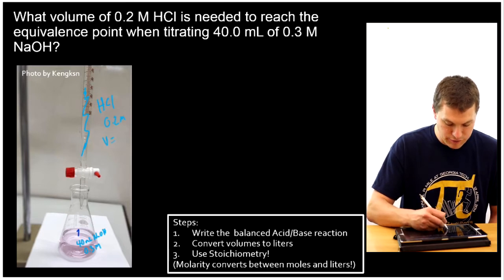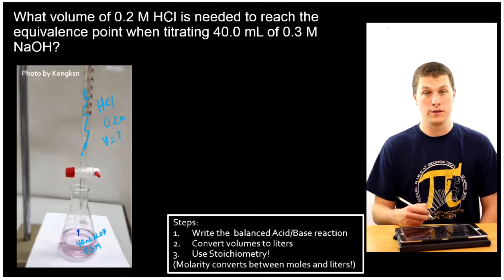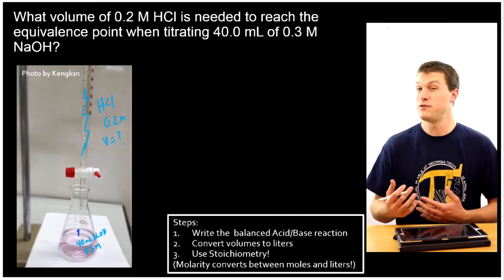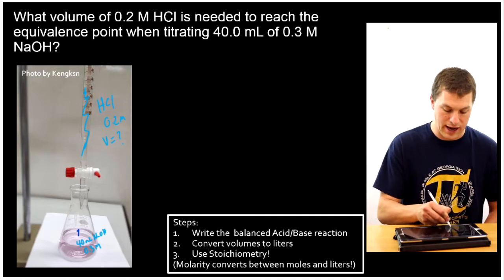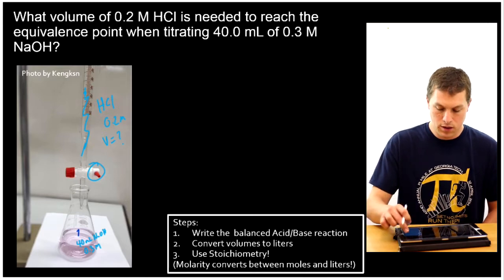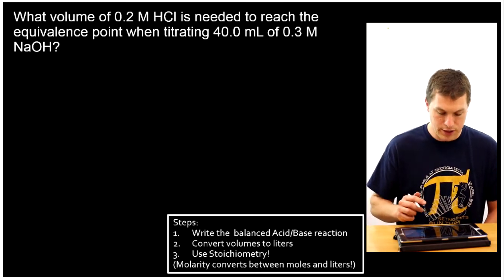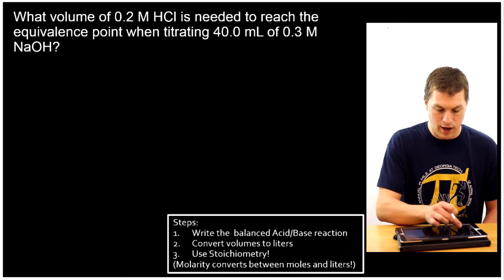But we don't know how much volume it's going to take to reach the equivalent point. So that's what we're solving for in this problem. How much volume is it going to take to reach the equivalence point? How much will I have to let out with this little valve? Well, I've broken that problem down into three steps. The first thing we're going to do is write our acid-base reaction.